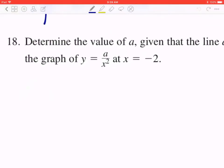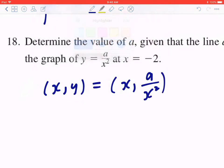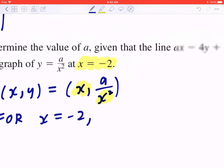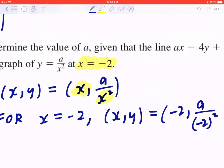If you think about the function y equal to a over x squared, this means if you look at the point (x,y), you can express this in terms of x. So it's going to be (x, a over x squared). And you're given the fact that x equals negative 2. So you can plug in negative 2 to find the location of this point. For x equals negative 2, this implies that the point (x,y) equals (negative 2, a divided by negative 2 squared). If you simplify this, that's going to be negative 2, a divided by 4.